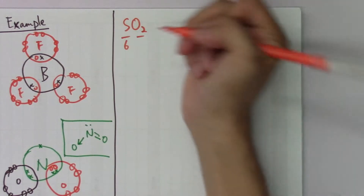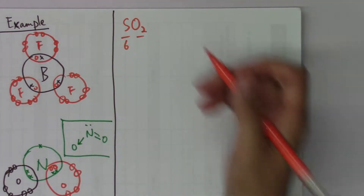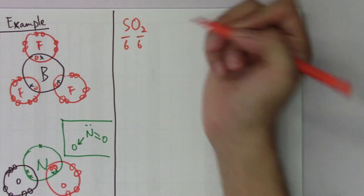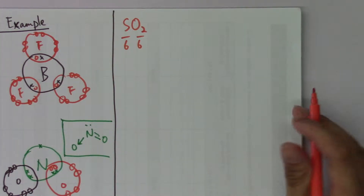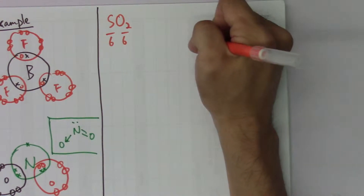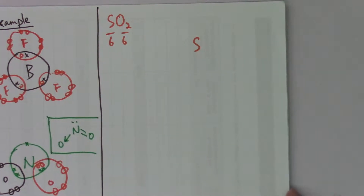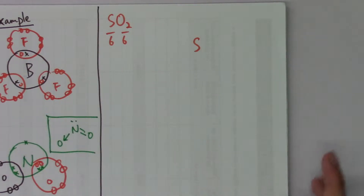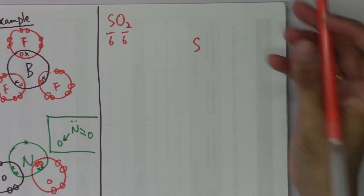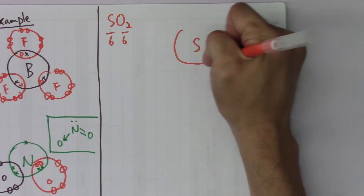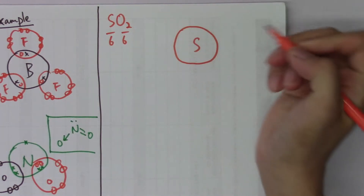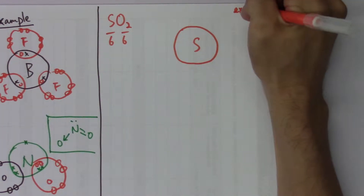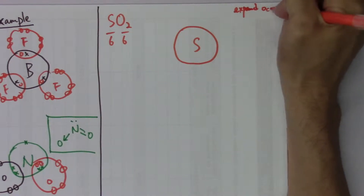Sulfur has six electrons on its atom shell, and oxygen also has six. Sulfur belongs to period three. Period three elements can contain up to 18 electrons on the third electron shell — the maximum number — so sulfur can expand its octet.